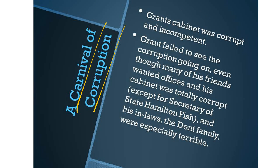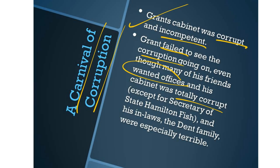Grant's administration was a carnival of corruption. His cabinet was very corrupt and incompetent. Grant failed to see the corruption going on, even though many of his friends wanted offices and his cabinet was totally corrupt. The only one who wasn't really corrupt was Secretary of State Hamilton Fish. And his in-laws, the Dent family, were one of the worst offenders of corruption in politics.